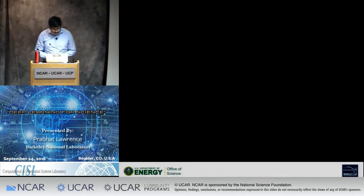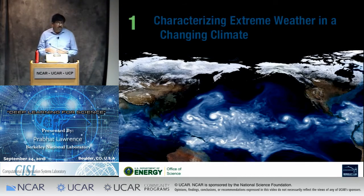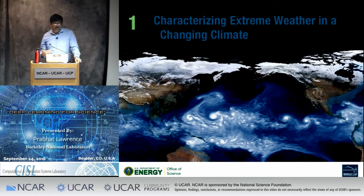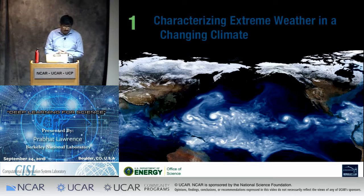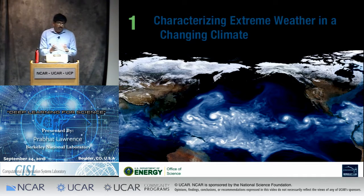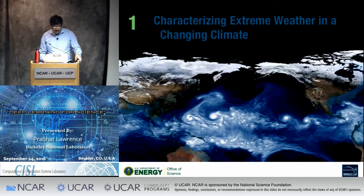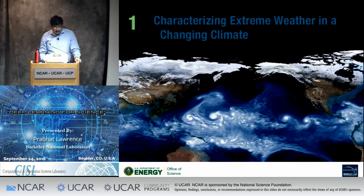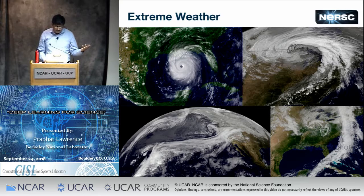We're going to spend most of our time on deep learning use cases in science — actual results of deep learning working in practice. The first example is close to your hearts: climate scientists have spent 40 years developing extremely sophisticated models. You can configure different carbon emission scenarios, run them out through the end of the century, and end up with a 100-terabyte dataset to analyze. Reducing that dataset by computing a global annual mean temperature or sea level rise doesn't do justice to all of that complexity. Increasingly, our climate science collaborators are interested in characterizing extreme weather characteristics — looking at the evolution of hurricanes, extra-tropical cyclones, atmospheric rivers, and weather fronts.